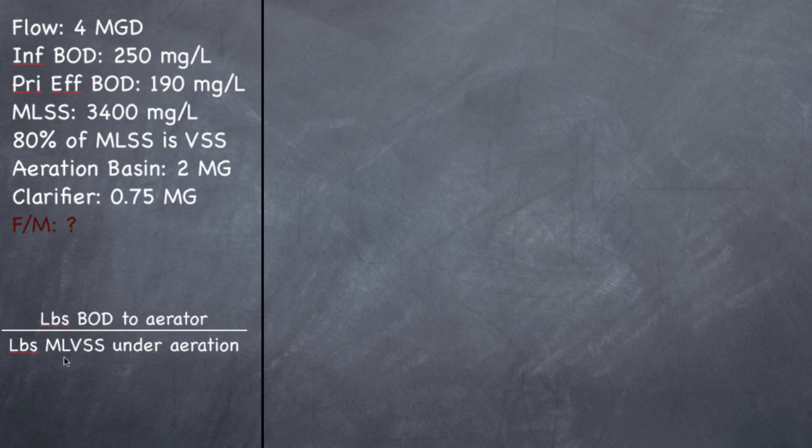So the formula for F/M is pounds of BOD to the aerator divided by pounds of MLVSS under aeration. Now before we actually start, I do want to say that I'm thinking that you guys should be able to do pounds formulas like the back of your hand. I'm not going to be doing pie charts or pie formulas because they're too time consuming. You should be able to knock out a pounds formula in the blink of an eye. So we're not going to spend a lot of time on that. I want to spend more time on these actual formulas so that you as an operator can memorize them. So first, let's find the pounds of BOD to the aerator.